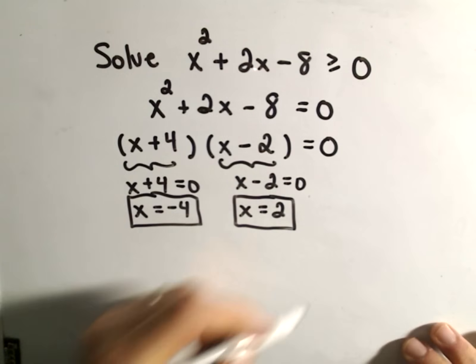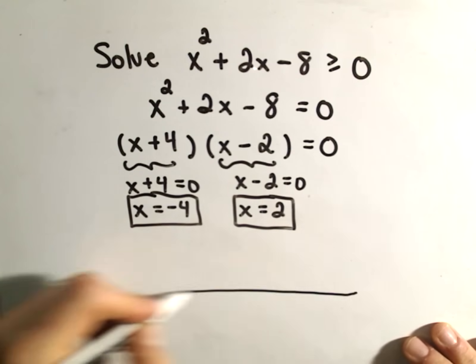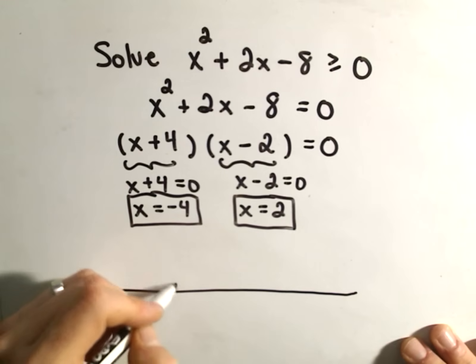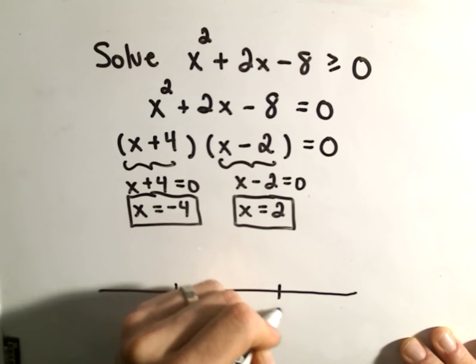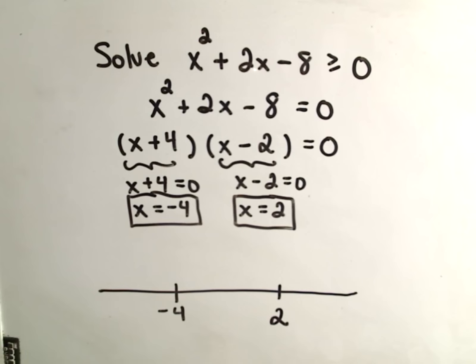Alright, so now I'm going to make my number line. I'm going to put these points on there. I'm going to put negative 4 down, and then I'm going to put positive 2 on there. And those are the only numbers I'm going to put on my number line.